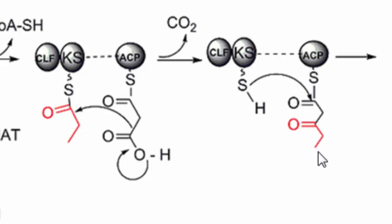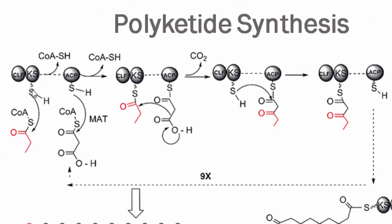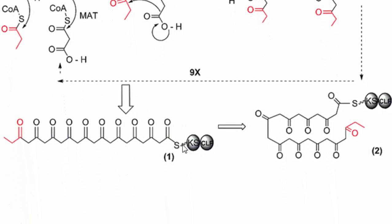Once condensation occurs, carbon dioxide is released and the resulting structure is formed. This step repeats — the malonyl group is attached again in the same cycle — and after the cycle repeats approximately nine times, a long chain structure is obtained, which then gets cyclized with the help of a cyclase enzyme.